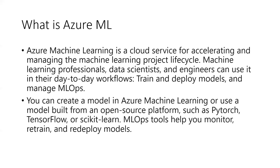Many people are curious about different cloud technologies used in the industry. We use AWS, Azure ML, and Google Cloud ML capabilities. It depends on the industry, but Azure and AWS certifications are on top. Azure ML is basically a cloud service for accelerating and managing the machine learning project lifecycle. We can run ML models on local systems, but the question is whether we have enough computational power — that's why we migrate to cloud technologies like Azure ML.